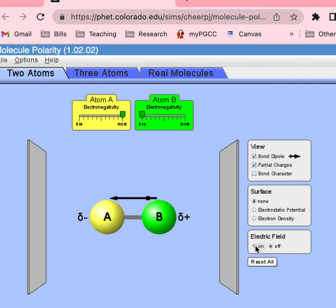You can see that these two plates, one's positive and one's negative, and the molecule actually reorients. So the partially negative part A is closer to the positive part, and the partial positive is closer to the negative.